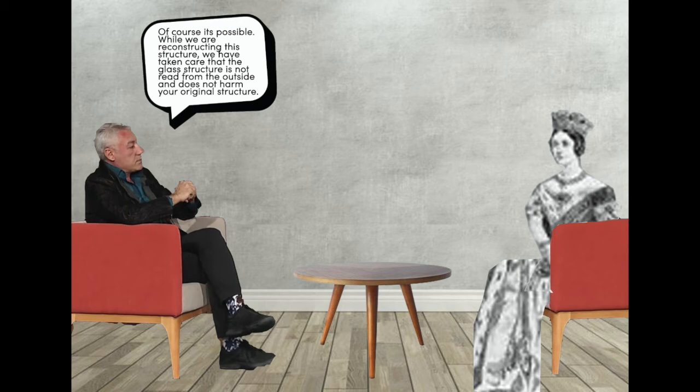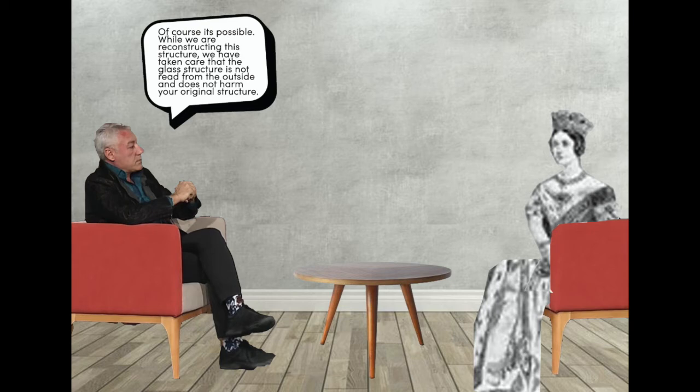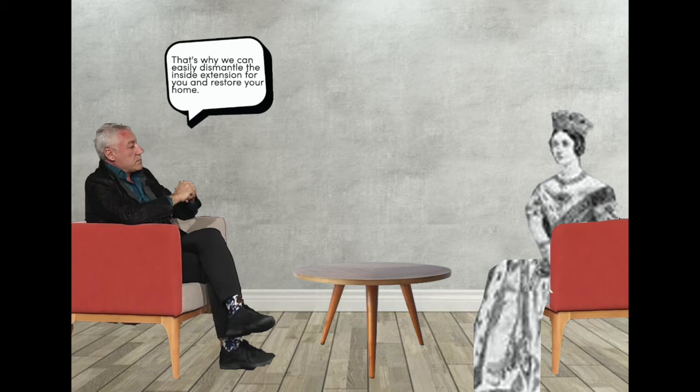Of course it's possible. While we are reconstructing the structure, we have taken care that the glass structure won't be red from the outside and won't harm your original structure. That's why we can easily dismantle the inside extension for you and restore your house.